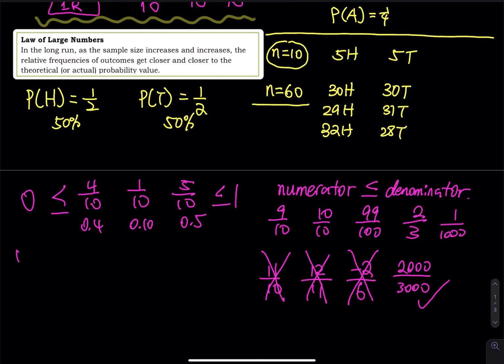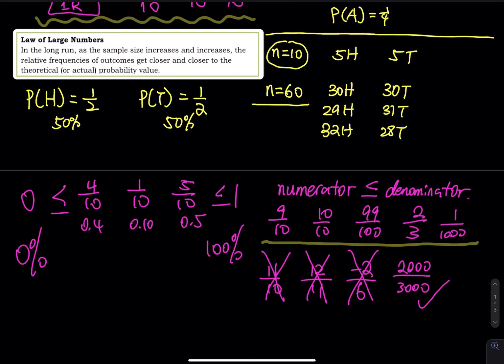Probability is always between 0% and 100%. When you write probability as a fraction, the numerator must be less than or equal to the denominator. Is 3 over 3 a probability? Yes — 3 divided by 3 is 1, meaning 100%. Is 10 over 10 a probability? Yes, 100%. Is 0 over 5 a probability? Yes — 0 divided by 5 is 0, meaning it is impossible to happen.